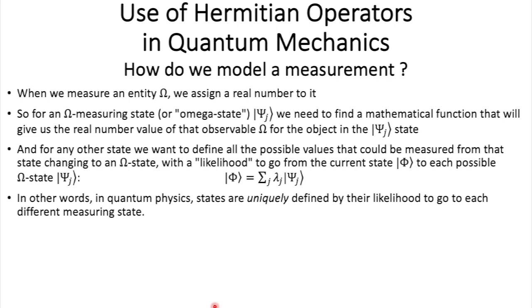And what that means is that there is a likelihood lambda j here from phi to get to psi j. In other words, in quantum physics, states are uniquely defined by their likelihood to go to each different measuring state. So, basically, this means that quantum physics is deterministic, as opposed to what you hear. Well, but there is some probability stuff, and we're going to see that too. So, if we define the states as being vectors, this looks exactly like defining a basis, this kind of equation here.